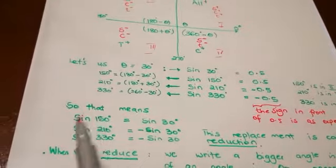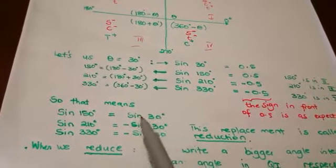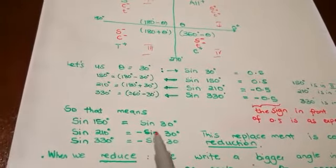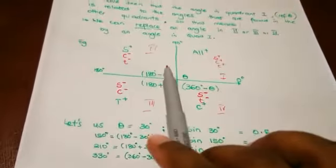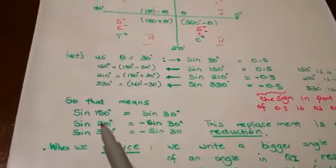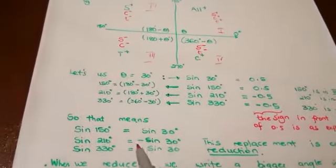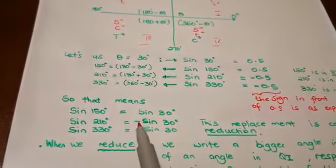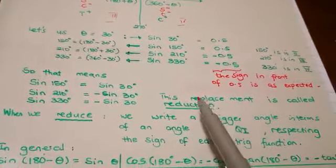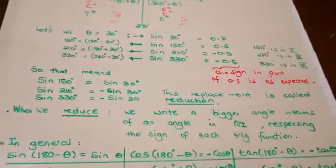So if I have sin 150 and I'm asked to reduce, I can replace 150 with 30 because I have seen that they give the same answer. If I have sin 210, I can replace it with sin 30, but respecting the sign given by the quadrant. So sin 210 is the same as sin 30, but because it is in the third quadrant, I have to write the minus. This replacement is called a reduction — when we reduce, we write the bigger angle in terms of the smaller angle that is in the first quadrant.